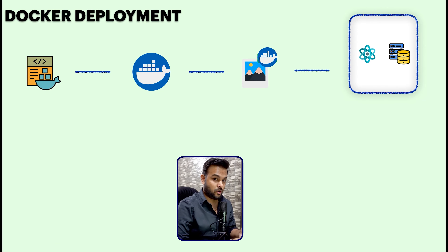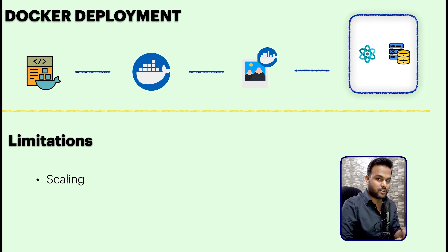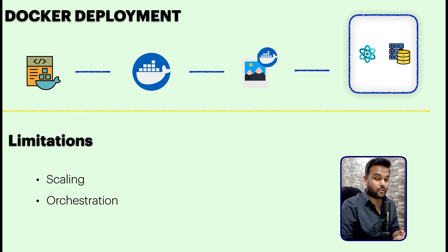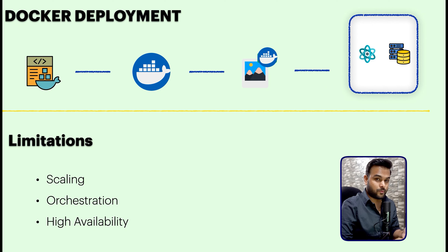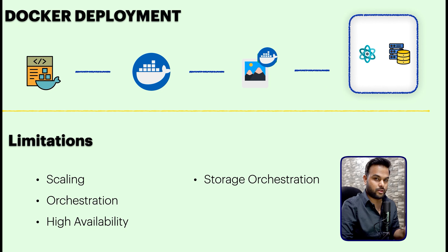Now let's look at some limitations of Docker deployment. The first limitation is scaling — scaling is quite difficult because it's a very hands-on process; you need to run the docker build and run commands again, which is very tedious. Then we have orchestration — it's very difficult to handle multiple Docker containers running. High availability is also an issue: if some Docker container fails, the Docker daemon will not restart it by itself, so you need to manually find all unhealthy containers, which increases your application's downtime.